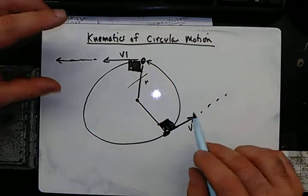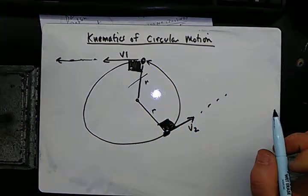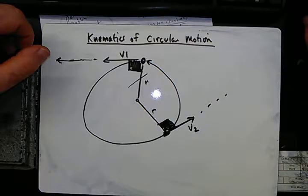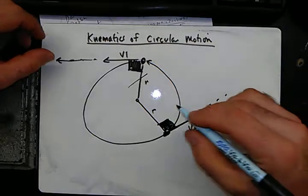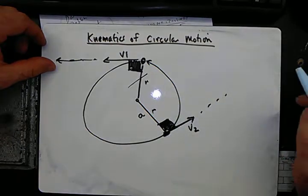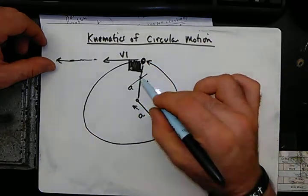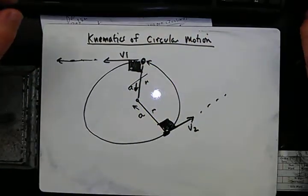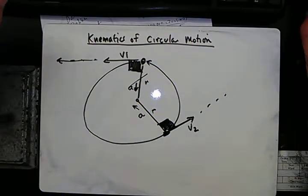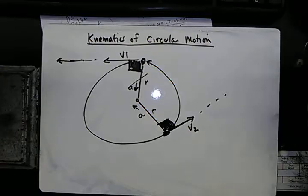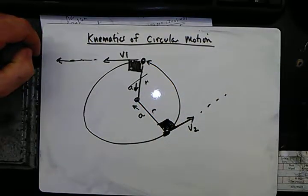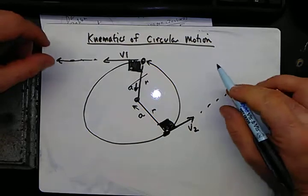We know the velocity is headed off perpendicular to the radius, but which direction is the string pulling? The string is actually pulling towards the center. In this situation the string is pulling this way, and in another position the string is pulling this way. So the string applies a force toward the center, meaning there must be an acceleration toward the center of the circle.